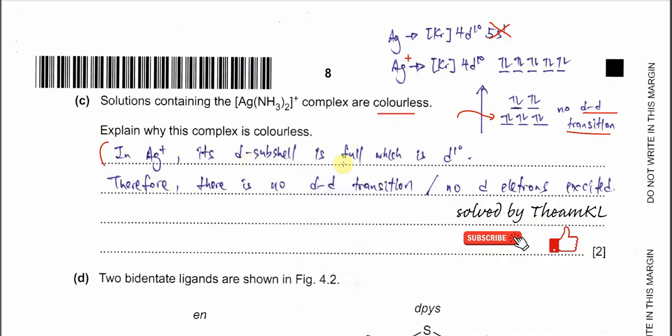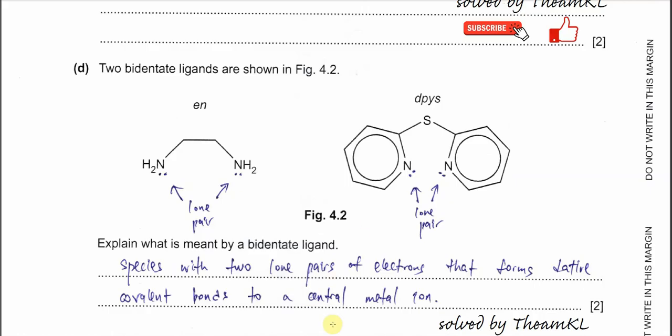This is the answer: its d orbitals are fully filled, as I told you, therefore no d-d transition.